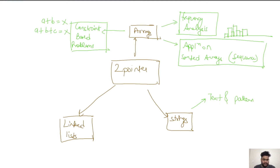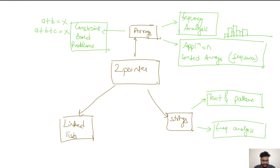In text and pattern problems, both a text and a pattern are given and we need to find the pattern within the text. There are very standard algorithms like KMP and Rabin-Karp which we are going to implement through two pointers. We'll discuss this pattern when we cover strings. The other kind of problem in strings is around frequency analysis — for instance, finding the frequency of each character or the top five characters with the highest frequency, which can also be solved using the two pointer technique.